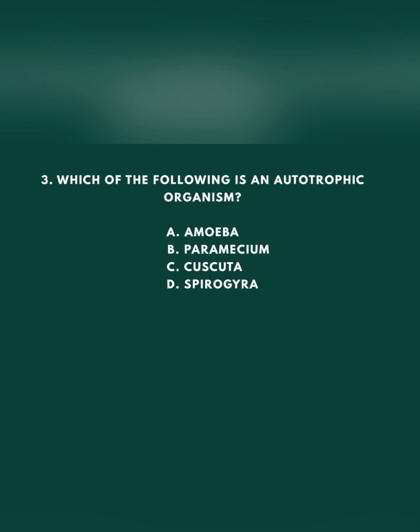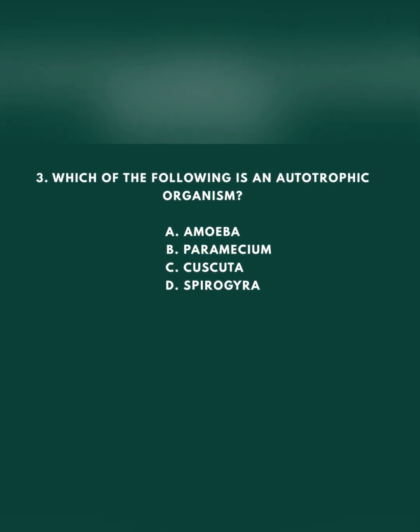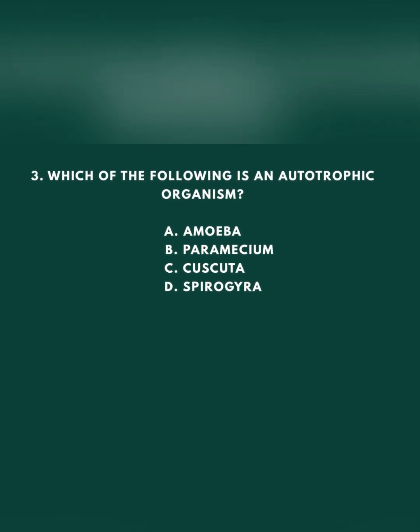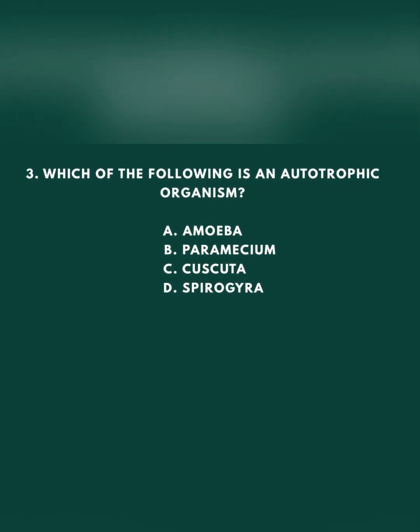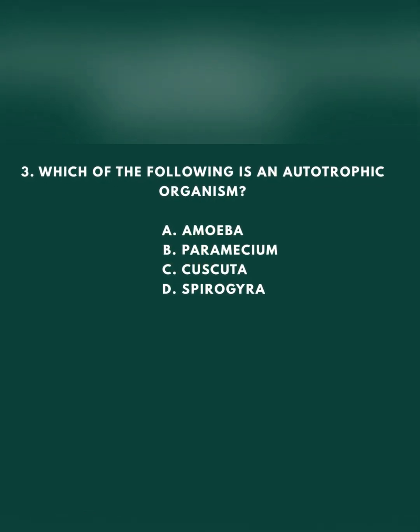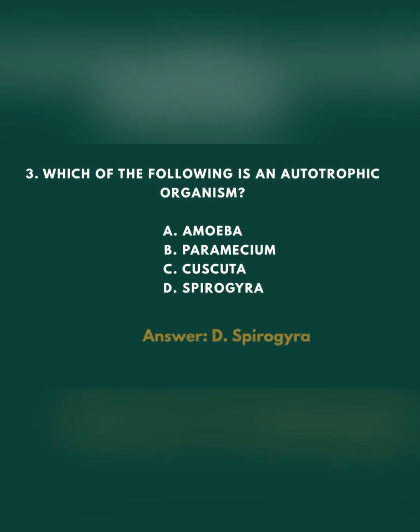Question 3: Which of the following is an autotrophic organism? A. Amoeba, B. Paramecium, C. Cuscuta, D. Spirogyra. The answer is D: Spirogyra.